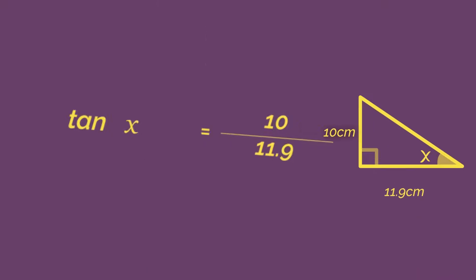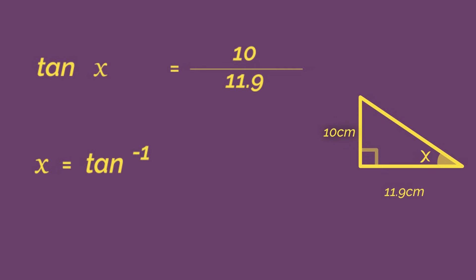So back to tan x equals 10 divided by 11.9. To get the x on its own we use inverse tan, brackets 10 divided by 11.9. So we type that into the calculator and we get x equals 40 degrees.